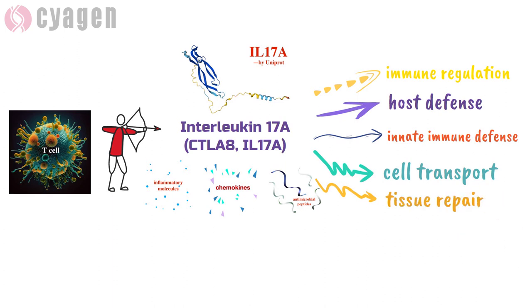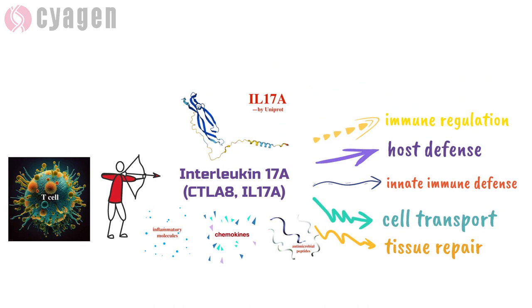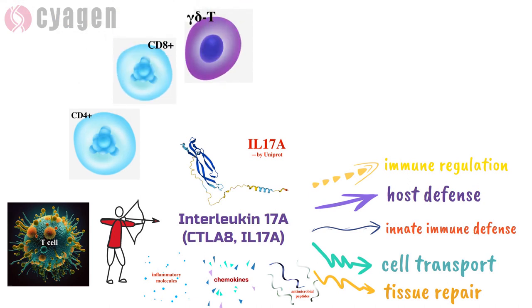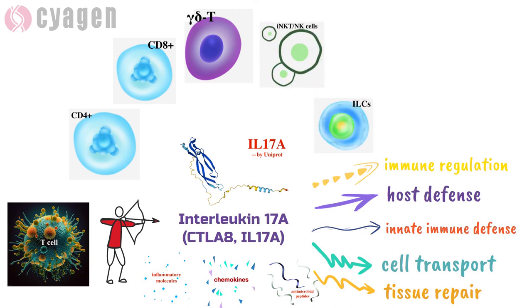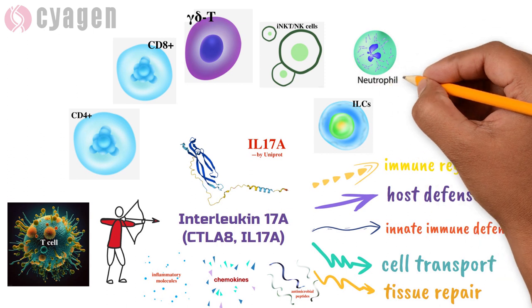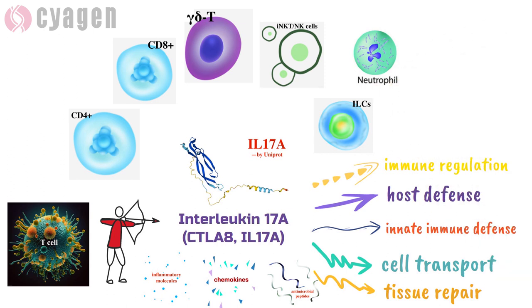Primary sources of IL-17A include lymphocytes such as CD4+, CD8+, gamma-delta-T, invariant NKT, and innate lymphoid cells, while non-T cells including neutrophils have also been reported to produce IL-17A under certain circumstances.